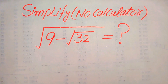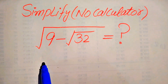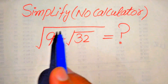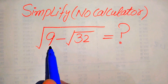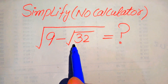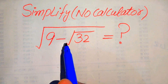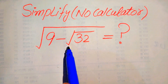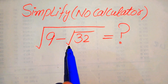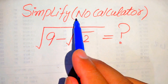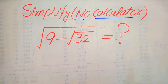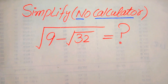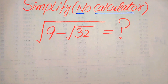Hello everyone. How to simplify this nice algebraic expression: 9 square root of 9 minus square root of 32. We write this algebraic expression into simplified form, but remember that a calculator is not allowed in this problem. This means we will show all of the working on this paper.